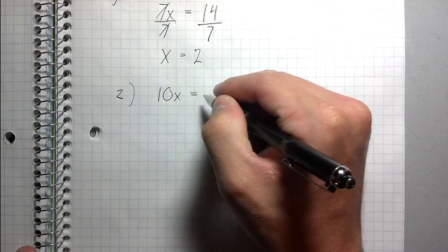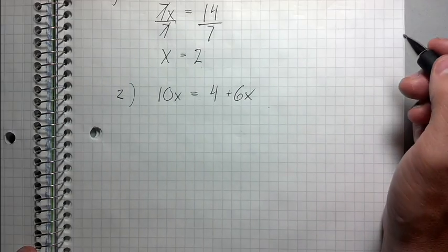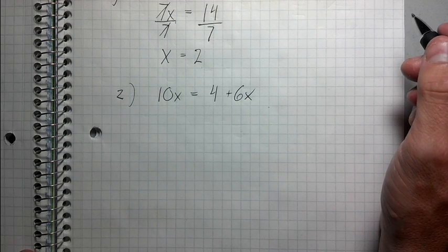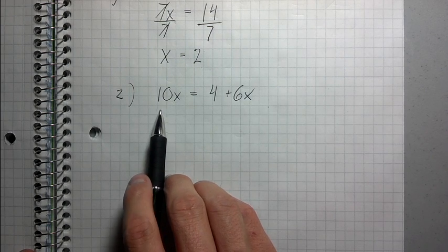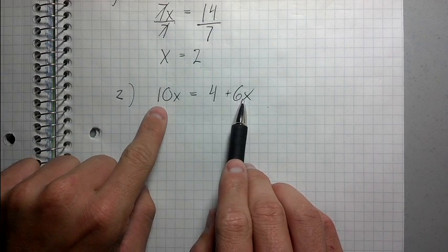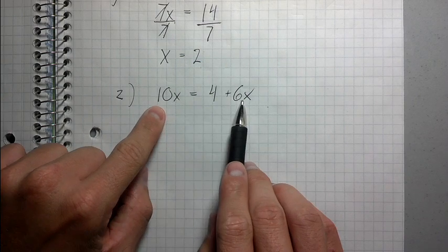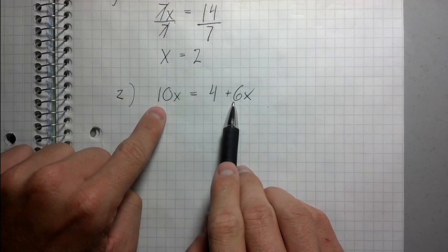10x equals 4 plus 6x. How do I do this? First, I need to combine like terms again. The difference here compared to the last example is that these two terms that contain x are on different sides of the equal sign. So instead of just combining them, I have to move one of these terms over or subtract it from both sides.